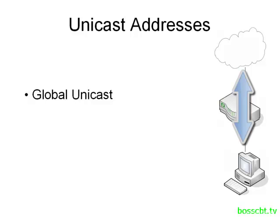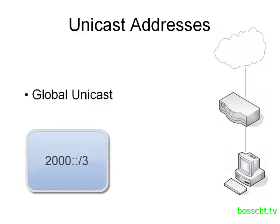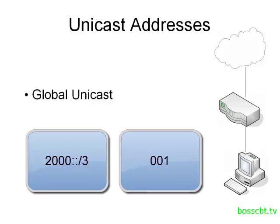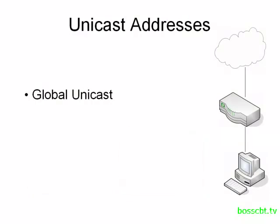You can easily identify a global unicast because they all come from the same prefix. The first three bits — 001 — are going to be the same for all global unicast IP addresses. So that's the first type: global unicast.